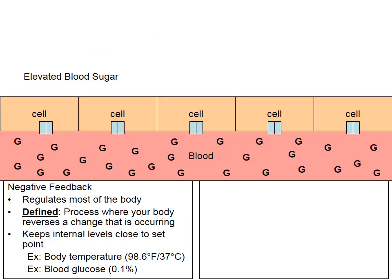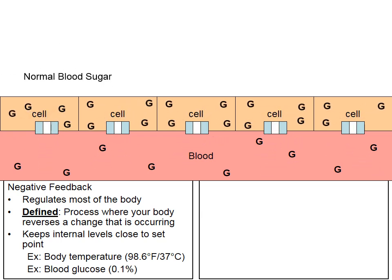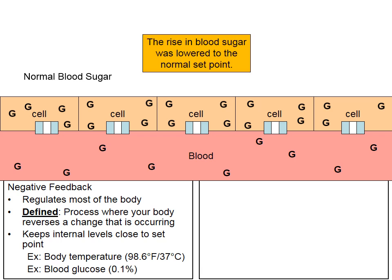After a meal, with elevated blood sugar, the pancreas releases insulin. Insulin attaches itself to little channels found on cells and causes these channels to open. Once the channels are open, glucose diffuses through them into the cells. This reduces the blood glucose level back to its normal 0.1%. This is a great example of negative feedback because the body reversed the change — the elevated blood sugar was returned to the 0.1% set point.